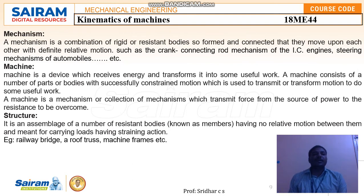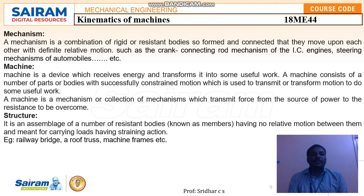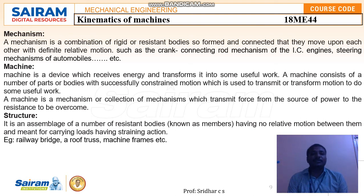A mechanism is a combination of rigid or resisting bodies formed and connected so that they move upon each other with definite relative motion. Examples include the crank and connecting rod in IC engines and steering mechanisms in automobiles. A mechanism is a combination of links — rigid or resisting bodies — interconnected to form relative motion.